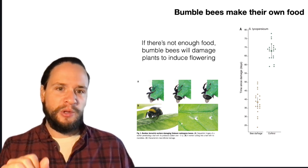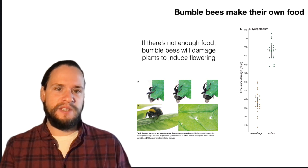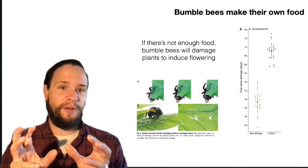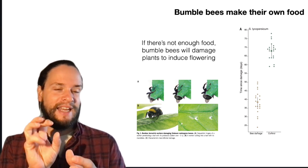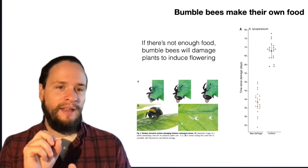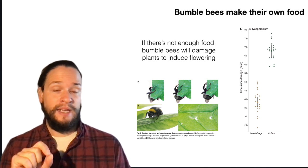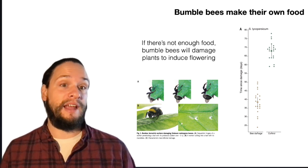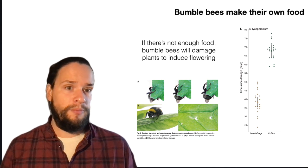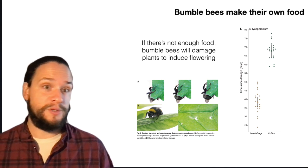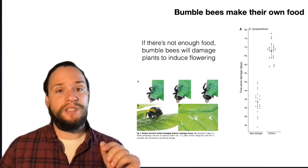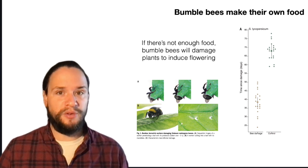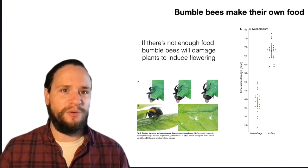So here what you're looking at in these diagrams is on the left side, this is a picture of a bumblebee biting and inflicting mechanical damage on a plant that is not flowering. And on the right, where you're seeing your graph showing that that actually induces flowering faster than controls that don't have any mechanical damage or manipulation. So it turns out the bees are able to induce plants to produce food for them faster when they're hungry and there's no food in the environment.